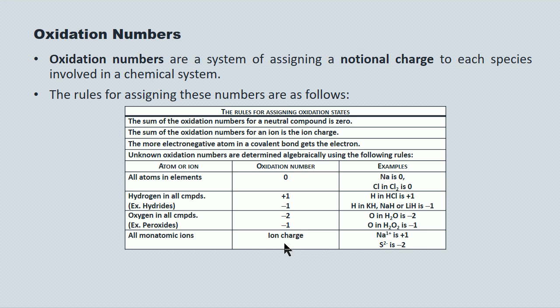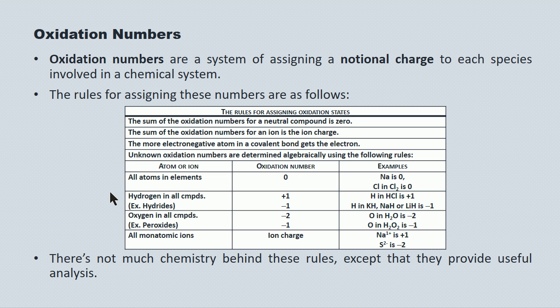And finally, for monatomic ions, their oxidation number is their charge. So for the sodium ion, the oxidation number is plus one. For the sulfide ion, the oxidation number is minus two. These numbers describe notional charge and notional movement of electrons, not actual electron flow. There's not a lot of chemistry behind these rules, but they're quite a useful analytical tool.